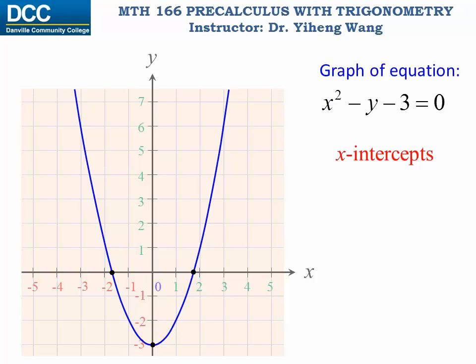Since the x-intercepts are points on the x-axis, they must have y coordinates of zero. So to determine them, we only need to set y to be zero and solve for x from the original equation.